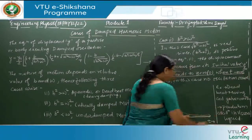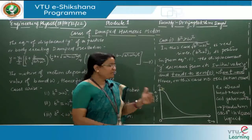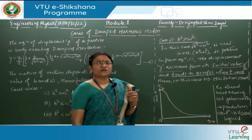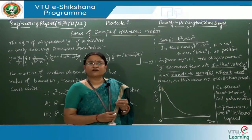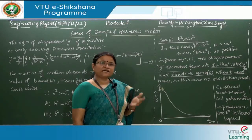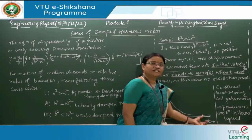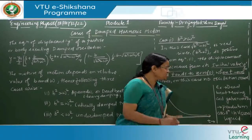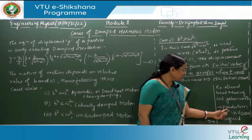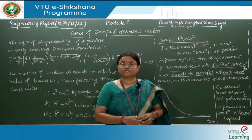As time tends to infinity, the amplitude of oscillation tends to zero. The particle undergoes damped harmonic oscillation and comes to its mean position at most once before coming exponentially to rest. This case is found in the deadbeat moving coil galvanometer and in a pendulum oscillating in a very viscous liquid.